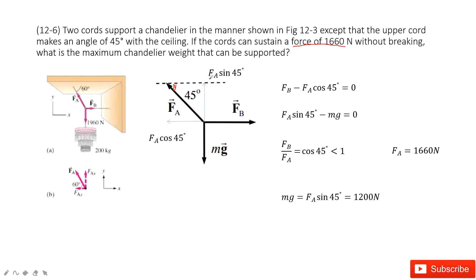In the X component, Fb minus Fa cosine 45 degrees. So we can write it as Fb over Fa equals cosine 45 degrees.